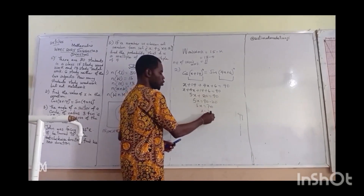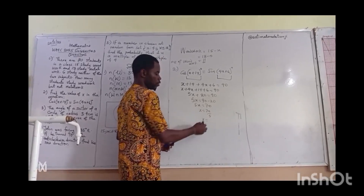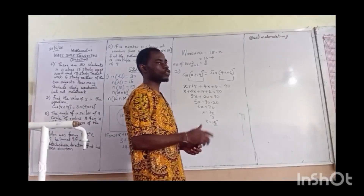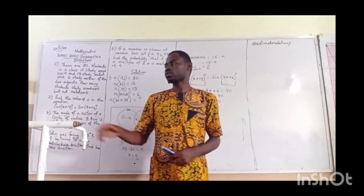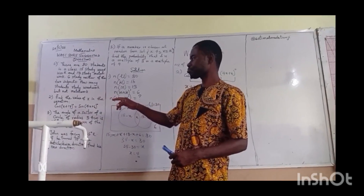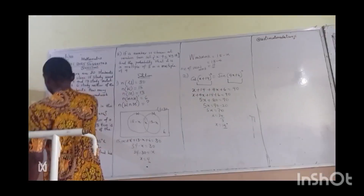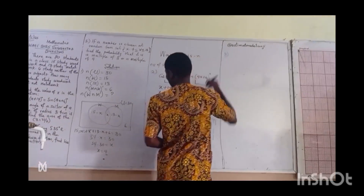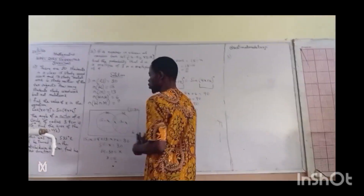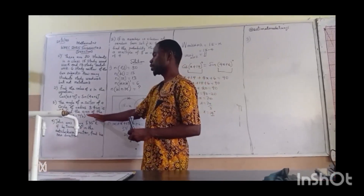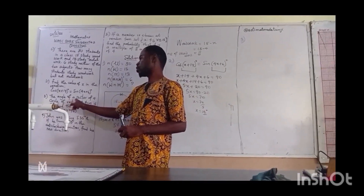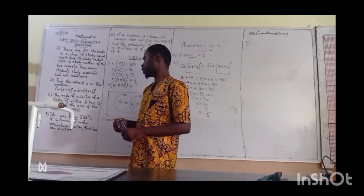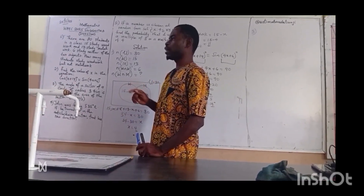So 5x equals 70, and x equals 70 over 5, which means x equals 14 degrees. Out of your practice questions, two questions answered. Number three is under sector.